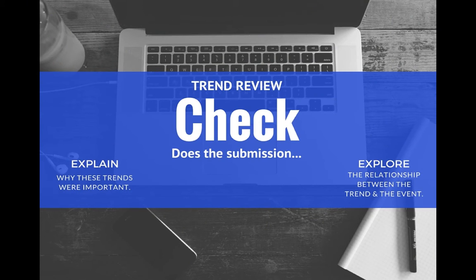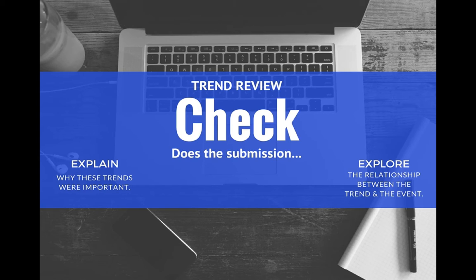Once you begin to identify trends and see patterns, begin to write. As you write, make certain you are doing two things: explaining why these trends were important, and exploring the relationship between the trend and the event. Trends set the scene — they help your reader understand the world your event is taking place in. Be explicit in your writing to help your reader understand why it's important to know what's been going on with the themes you've identified prior to the event, because that will help them understand your argument that follows later in the paper.